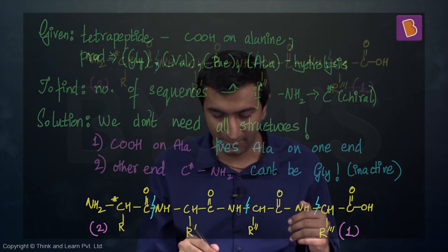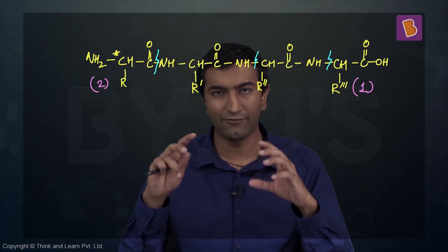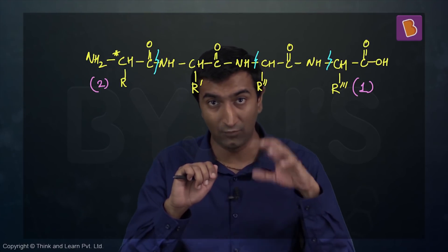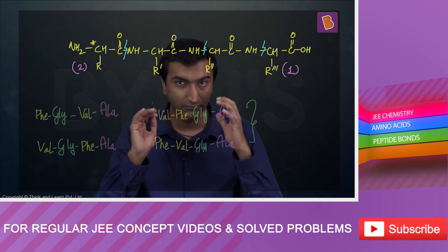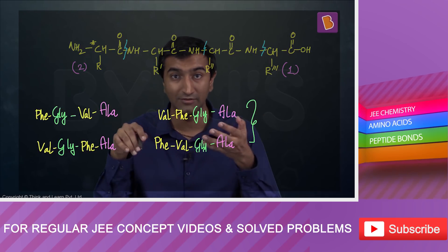Let's actually form these combinations now. I fixed alanine at one end, and the other end is not glycine. That gives me these four options, and your answer is four. Simple permutation and combination from there.